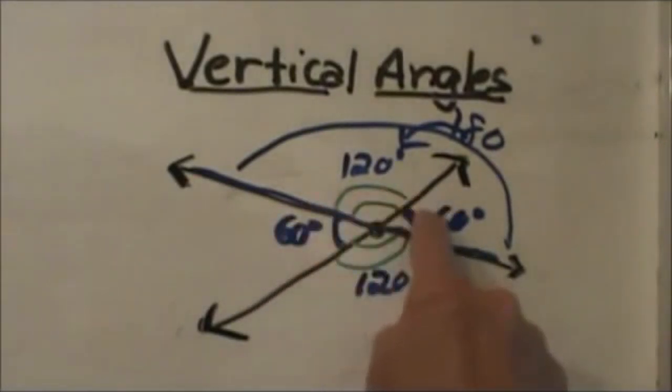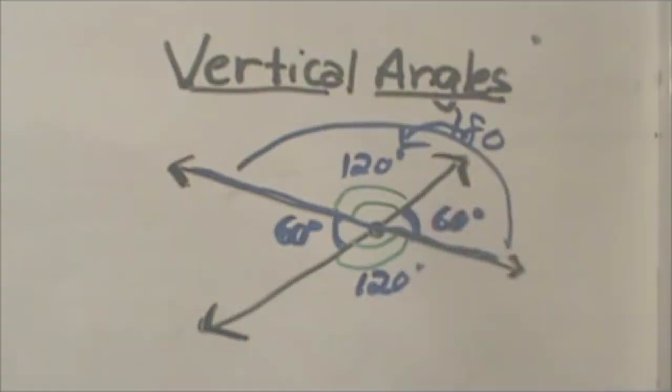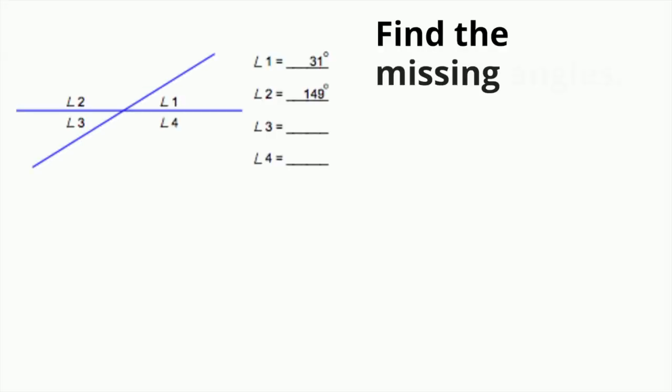These two 60 degree angles are vertical angles. These two 120 degree angles are vertical angles. But these two next to each other are adjacent angles and they add up to 180.